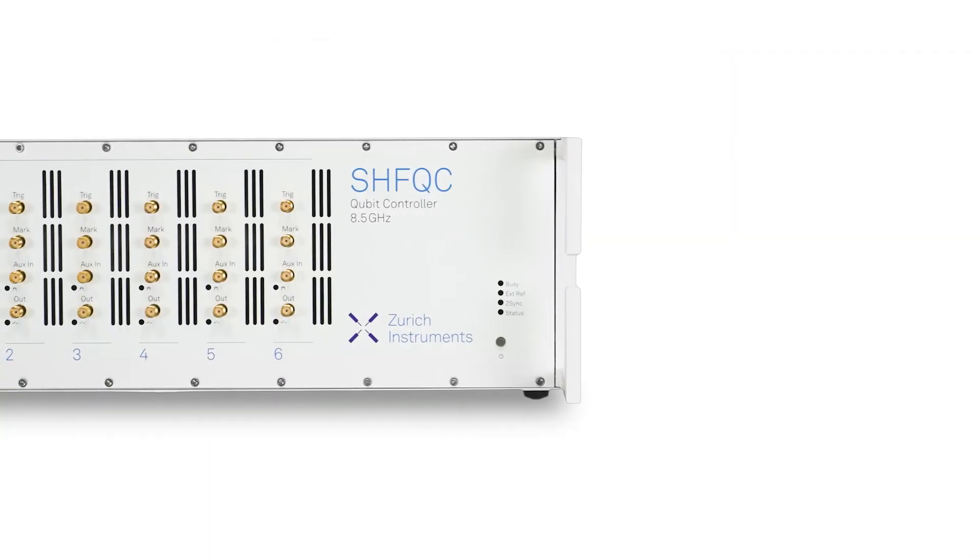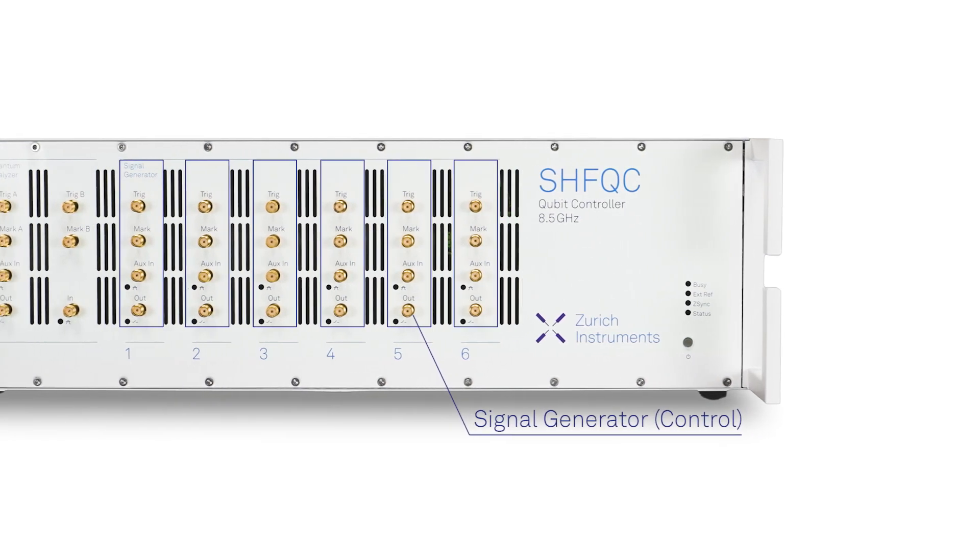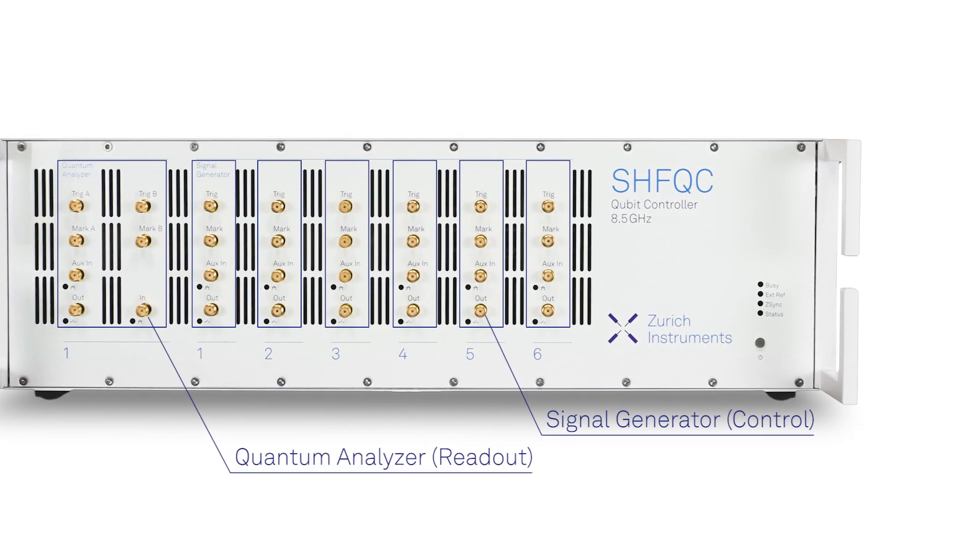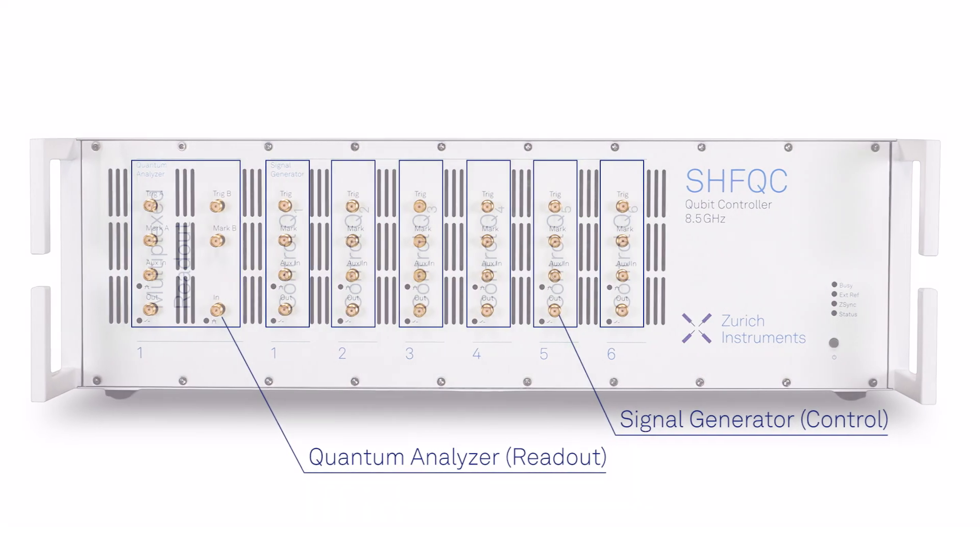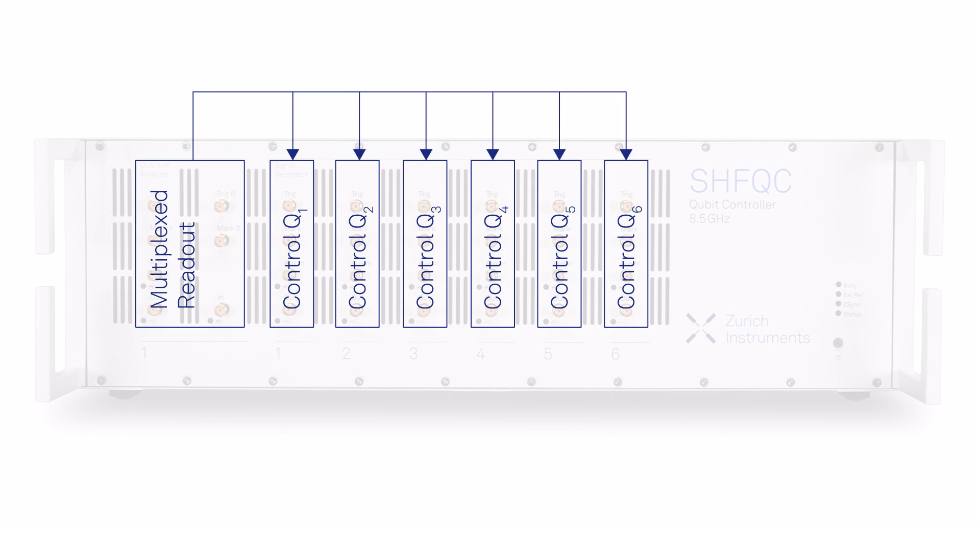The six included signal generators perform high fidelity single and two qubit gates on up to 6 qubits. And the qubit readout channel analyzes the quantum state. Both operate at up to 8.5 GHz and are internally linked through triggering and data sharing for experiment coordination and feedback.